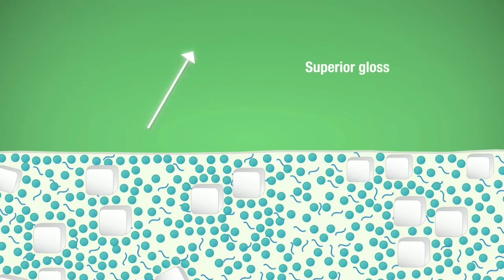Superior gloss improvement is achieved when the ultrafine enriched particles evenly fill the paint surface, intensifying its light reflection.